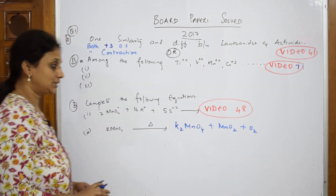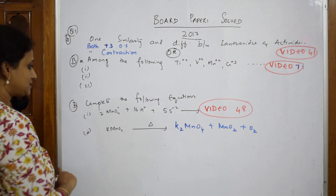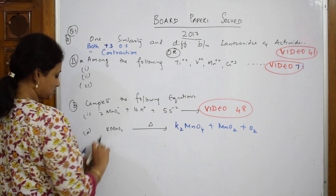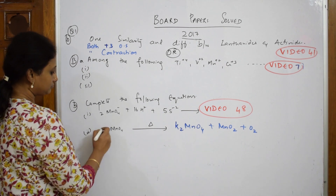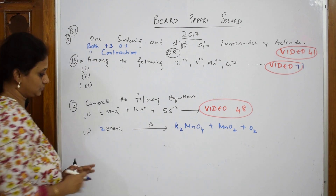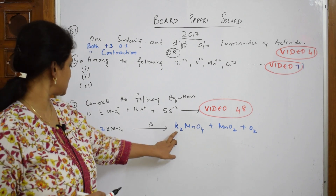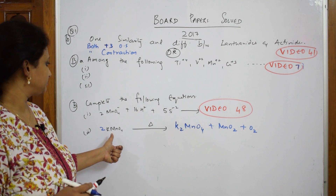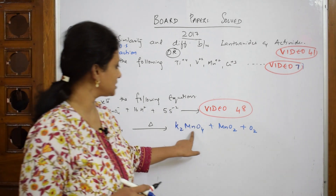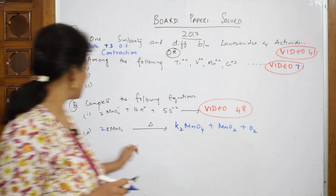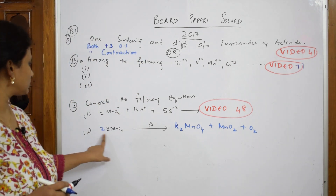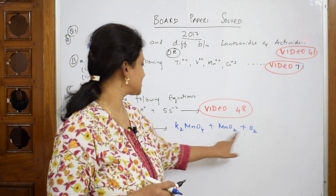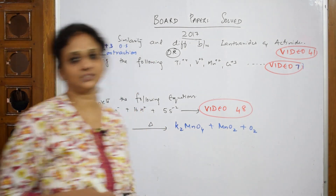So the products of heating KMnO4 are K2MnO4, MnO2, and O2. Now for balancing: we need 2 KMnO4 on the left side. Potassium: 2 on the left, 2 on the right. Manganese: 2 on the left, 1 and 1 giving 2 on the right. Oxygen: 4 × 2 = 8 on the left; and 4 + 2 + 2 = 8 on the right. The equation is balanced: 2 KMnO4 → K2MnO4 + MnO2 + O2.